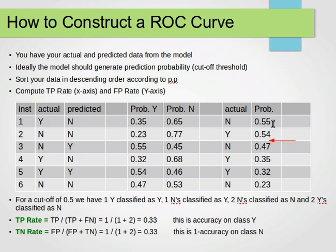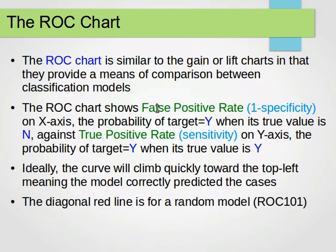We're dealing with a yes class. So we sort them in descending order. And then using different cutoff points, we can compute the true positive rate and the true negative rate. The false positive rate is the same as 1 minus specificity, which is on our x-axis. And the true positive rate is the same as sensitivity, and it's on our y-axis.